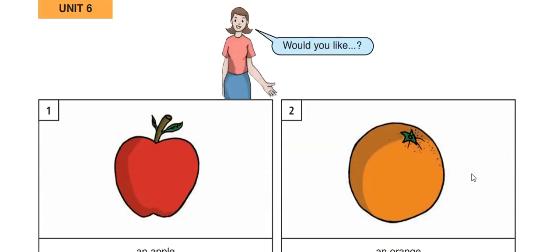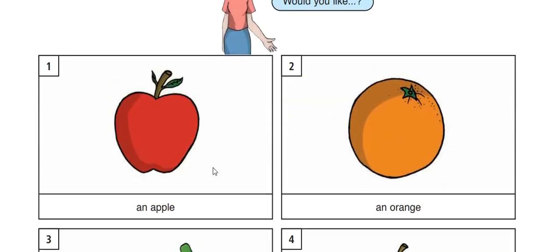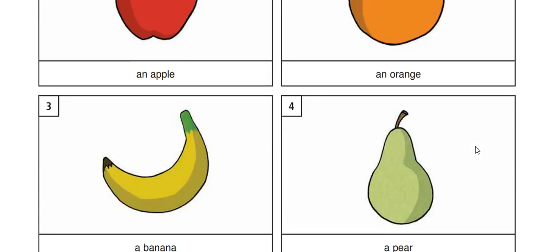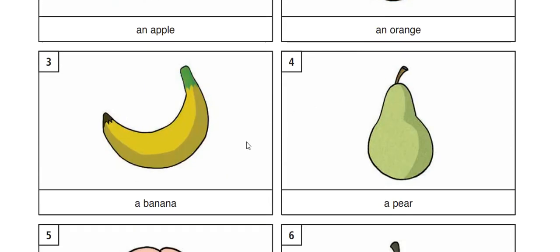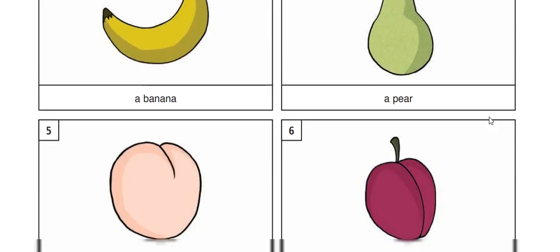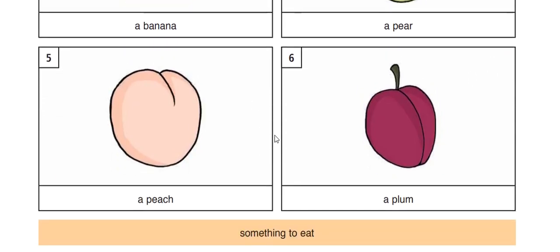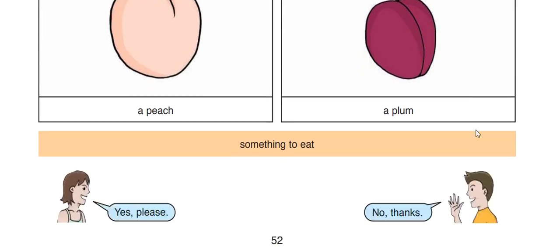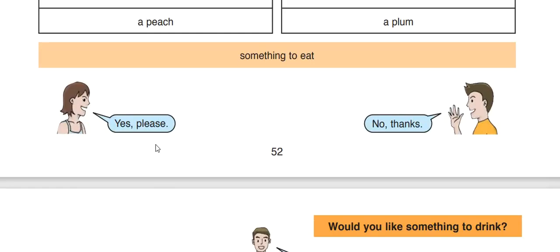Now your turn. Would you like picture one? Would you like picture two? Would you like picture three? Would you like picture four? Would you like picture five? Would you like picture six? You have to repeat these phrases again and again for practice. Something to eat? Yes, please. No, thanks.